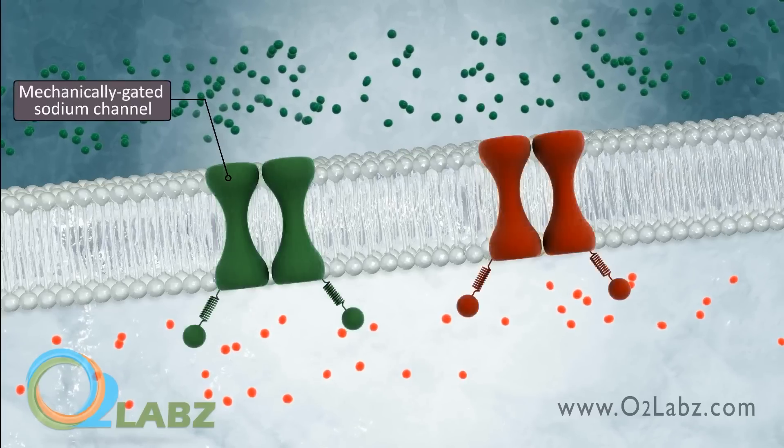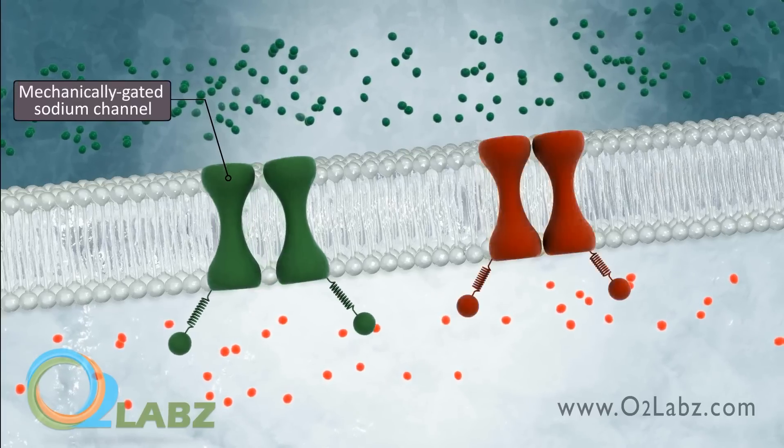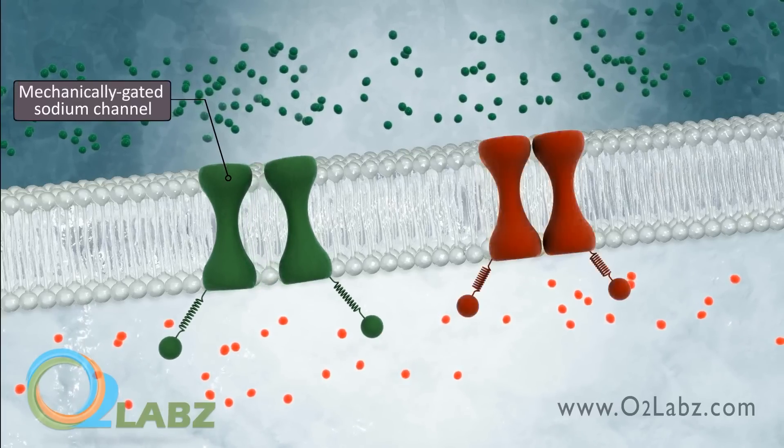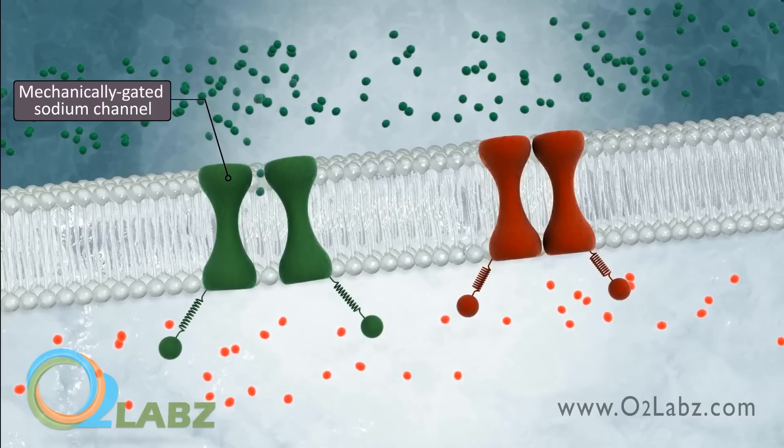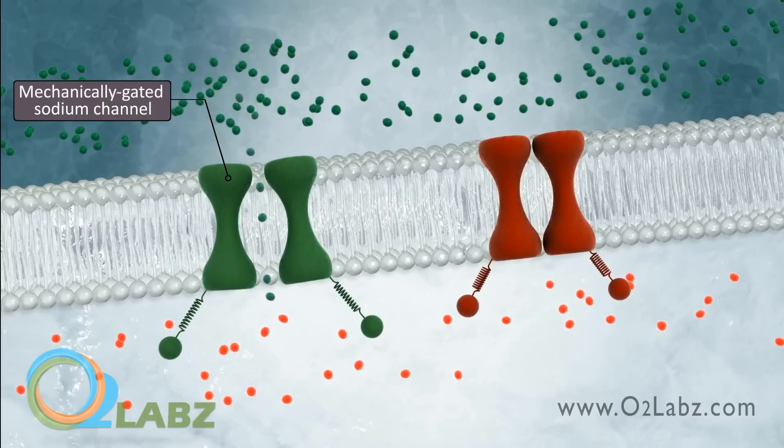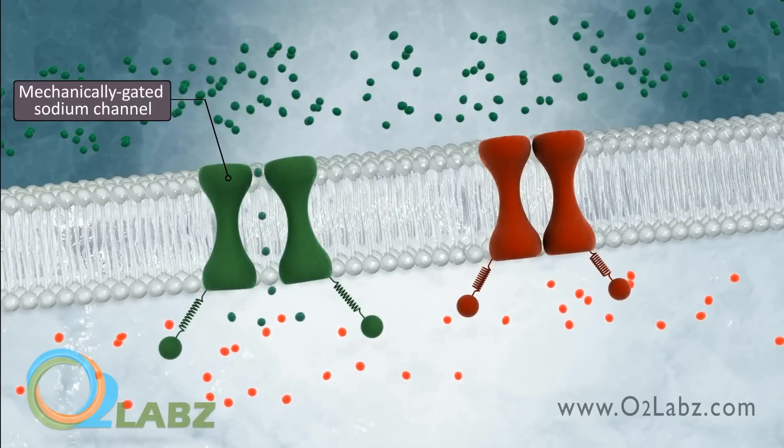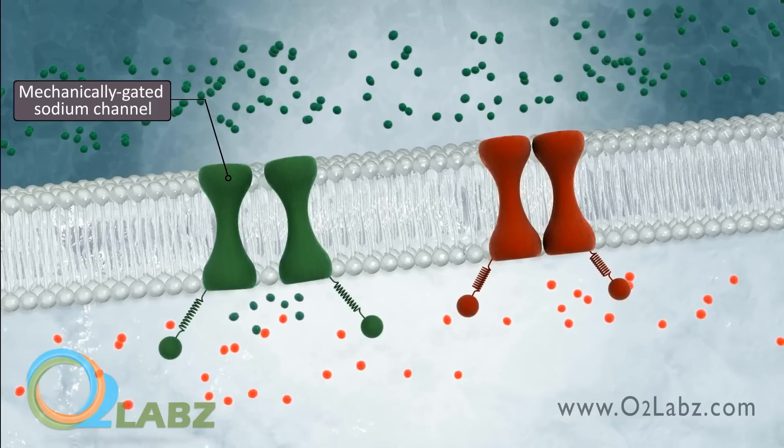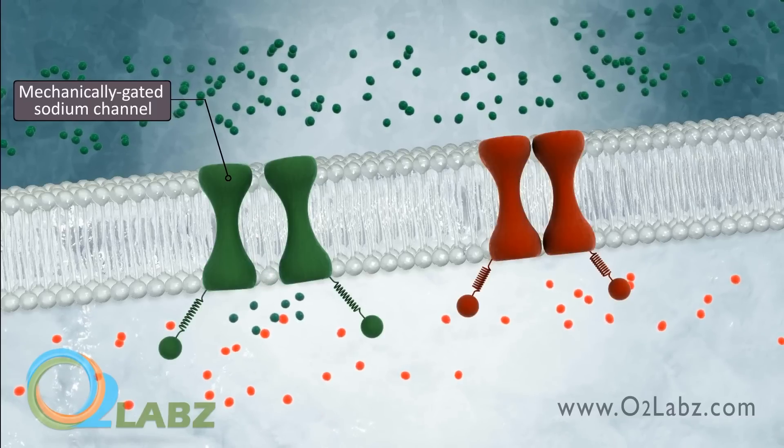Mechanically gated channels open when pressure, touch, or stretch is applied to the membrane. They are found in sensory receptors, located primarily in the skin, to inform the nervous system of mechanical changes in the surface of the body, resulting from conditions in its environment.